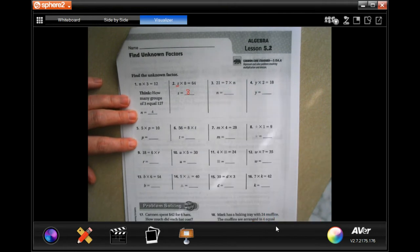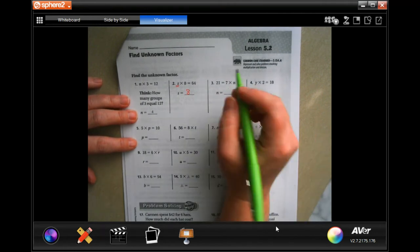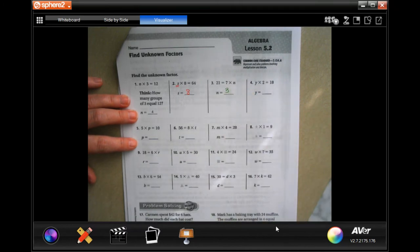21 is 7 times what? Well, 7 times 3 is 21.